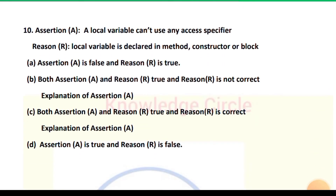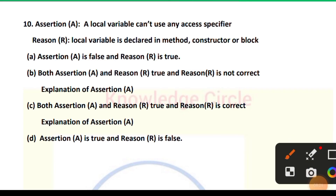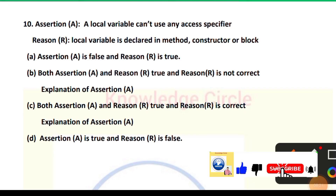Question 10 — Assertion: A local variable cannot use any access specifier. Reason: A local variable is declared in a method, constructor, or block. A local variable doesn't require any access specifier because it is declared inside a block and its scope is limited to that block, so there is no use for an access specifier. Option C is correct: both assertion and reason are true, and the reason is the correct explanation.